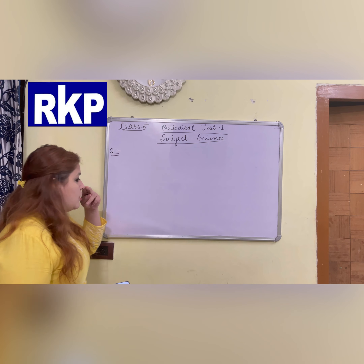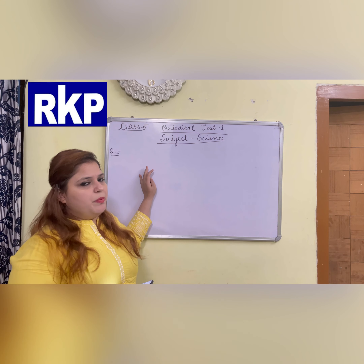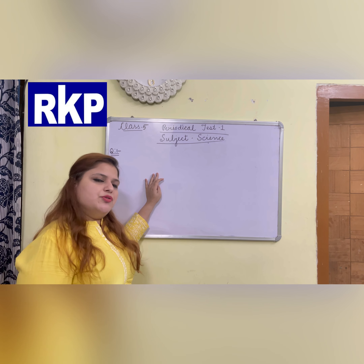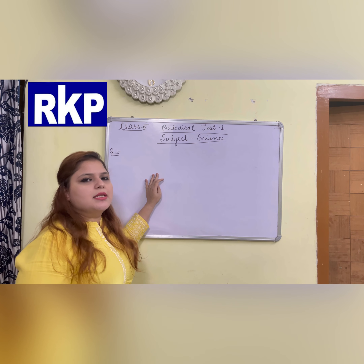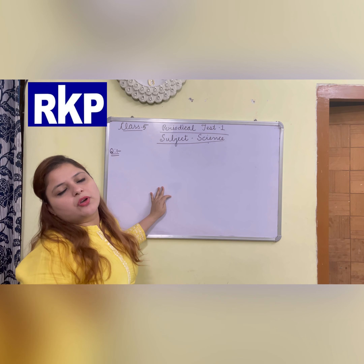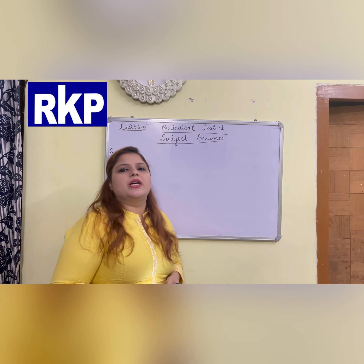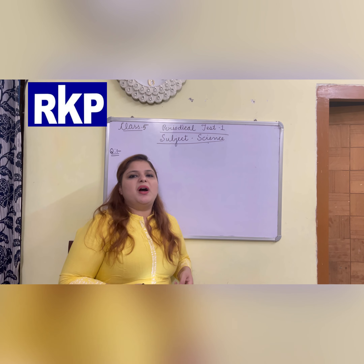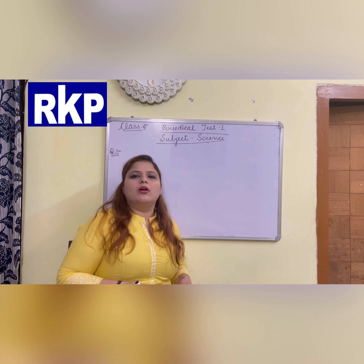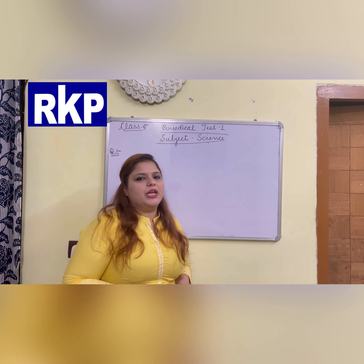Question number two had two parts. Part A was the structure of a seed, which we have discussed many times in class. Part B was: define cotyledon. Cotyledon is also known as seed leaf. It is that part of the plant which stores food for the baby plant, and inside which the embryo is present. The embryo takes food from the cotyledon.